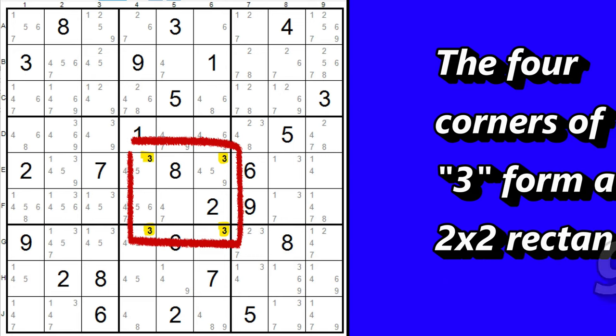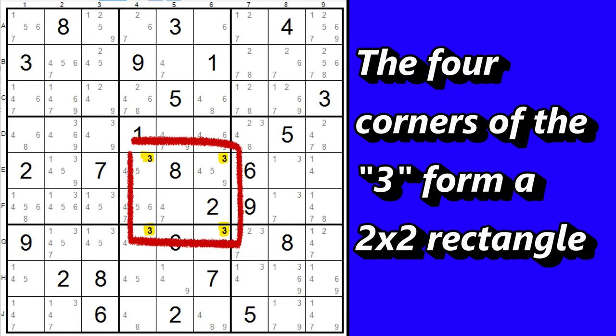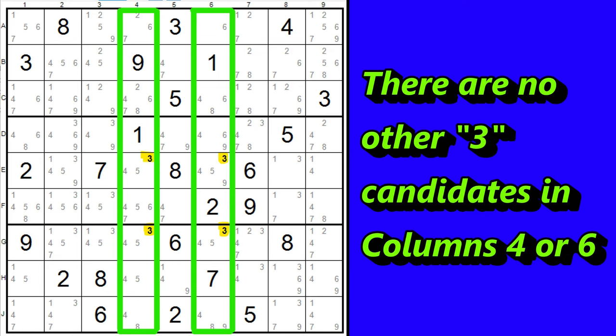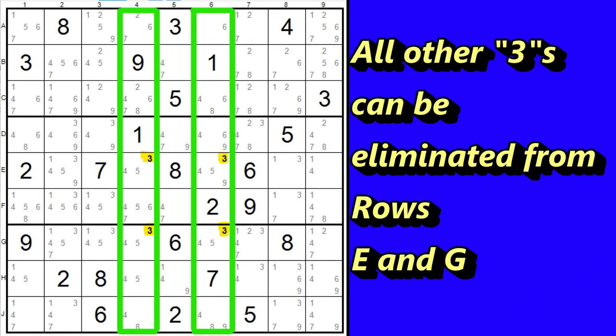Let's say the number 3 is a candidate in the four corners of a rectangle. Then, if the two columns, in this case columns 4 and 6, have no other cells with the number 3 as a candidate, the 3 can be eliminated as a candidate from any of the other cells in the same row, except, of course, the corners of the rectangle.